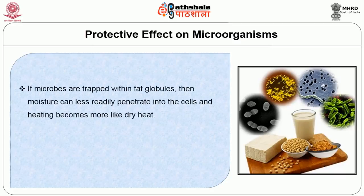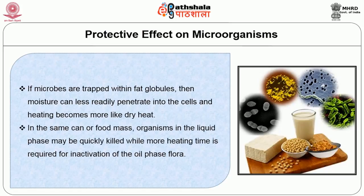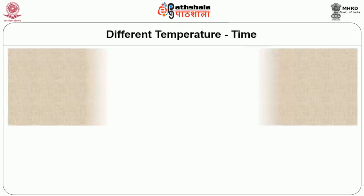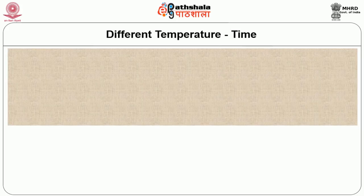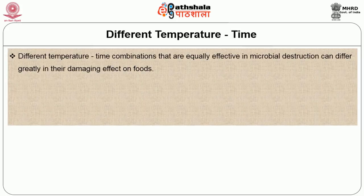If microbes are trapped within fat globules, moisture can less rapidly penetrate into the cells and heating becomes more like dry heat. In the same food mass, organisms in the liquid phase may be quickly killed while more heating time is required for inactivation of the oil-phase flora.